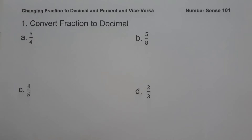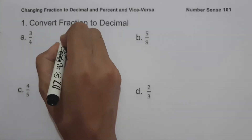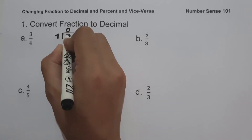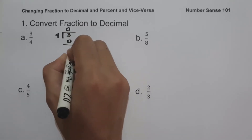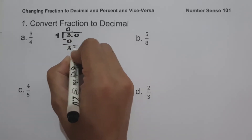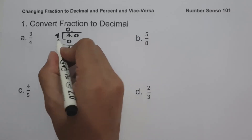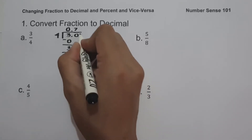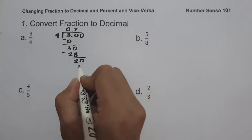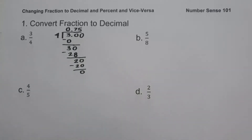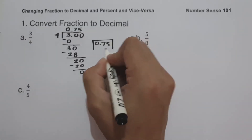On letter A, we have 3 fourths. So let us have 3 divided by 4. 3 divided by 4 — we add a decimal point and bring down 0. 30 divided by 4 is 7, and 7 times 4 is 28. 30 minus 28 is 2. Bring down another 0: 20 divided by 4 is 5, and 5 times 4 is 20. 20 minus 20 is 0. So 3 fourths in decimal is 0.75.